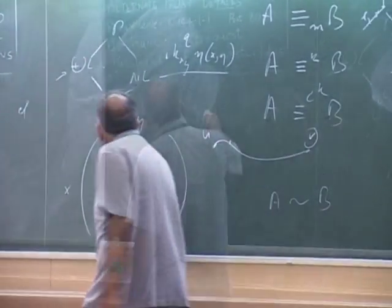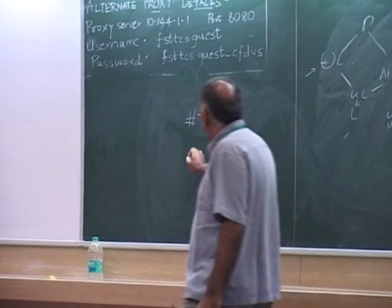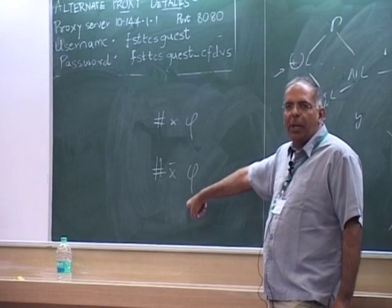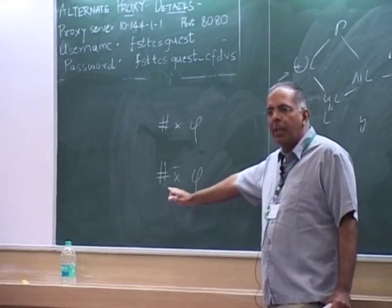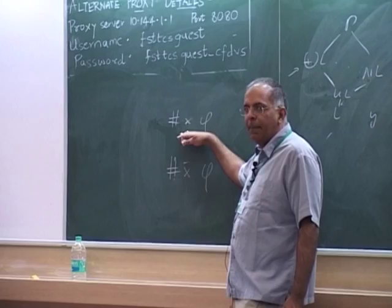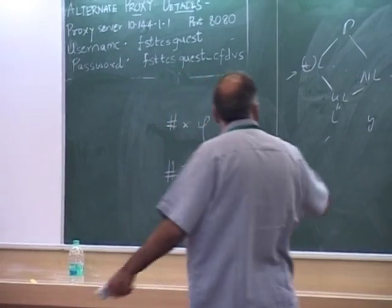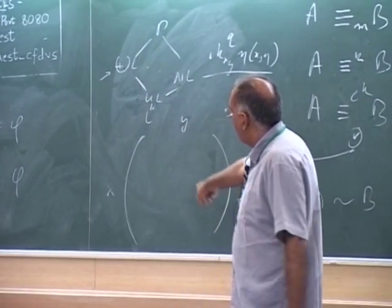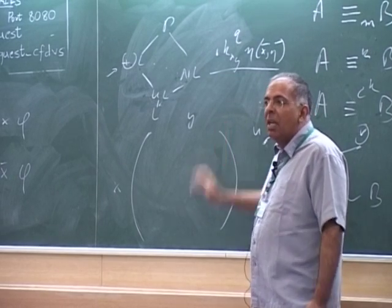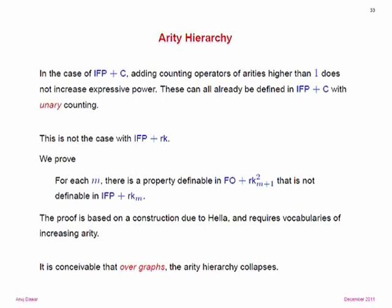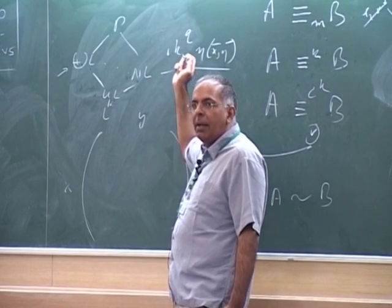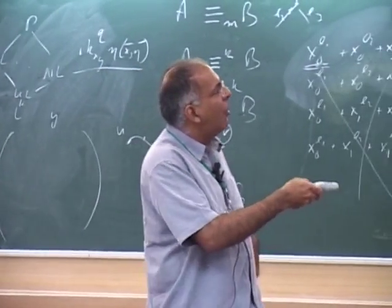We could have introduced a more general form of counting: count the number of tuples satisfying phi. We don't need to, because with scalar counting you can define this with a little work. We're in a more difficult situation with rank. I showed you I can define a matrix on I×I, but why shouldn't I take tuples and take an N^K by N^K matrix? We allow that. We would have liked to show a similar collapse — that higher-arity rank operators can be obtained from lower-arity ones — but in fact we proved the opposite: they form a hierarchy.